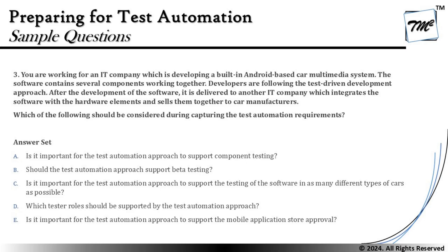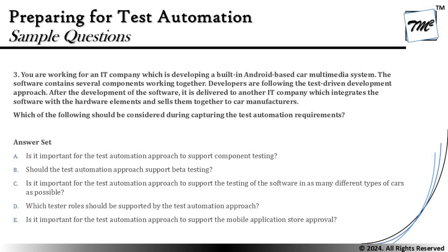Option A says: is it important for the test automation approach to support component testing? Yes — we should consider this because component testing is performed by the developing IT company. The development team builds something handed over to another team for integration, so it's important to know how much automation can be done at the component level. That should be a key requirement. Option B asks: should the test automation approach support beta testing? Beta testing is certainly not being performed here based on the given scenario — we see system integration is happening and no acceptance testing is specified.